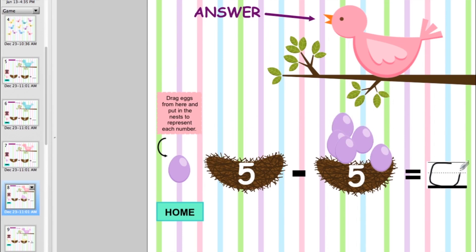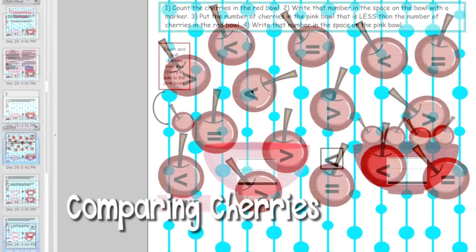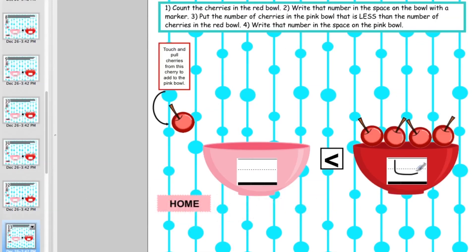In the comparing cherries game, students practice greater than, less than, and equal to. They will write how many cherries are in one bowl, look at the symbol, and then drag the correct amount of cherries in the first bowl and write how many they put to make the image correct.